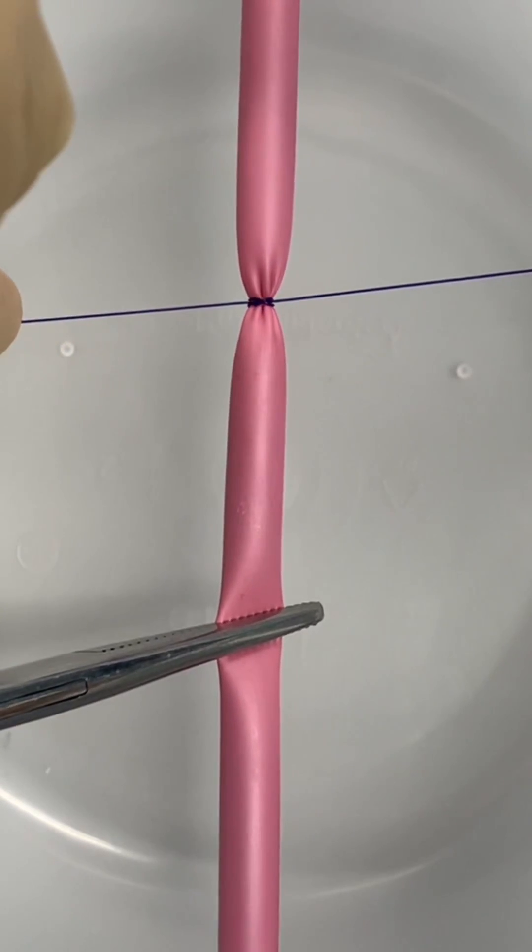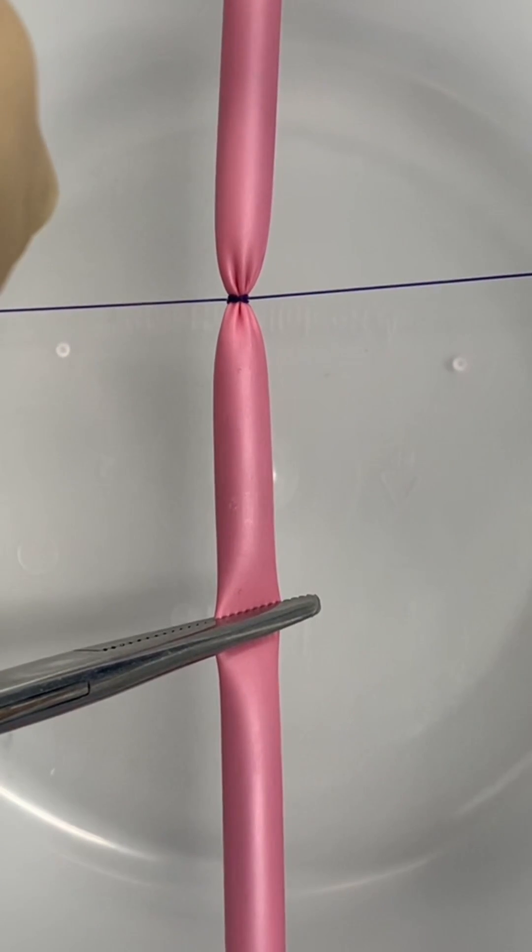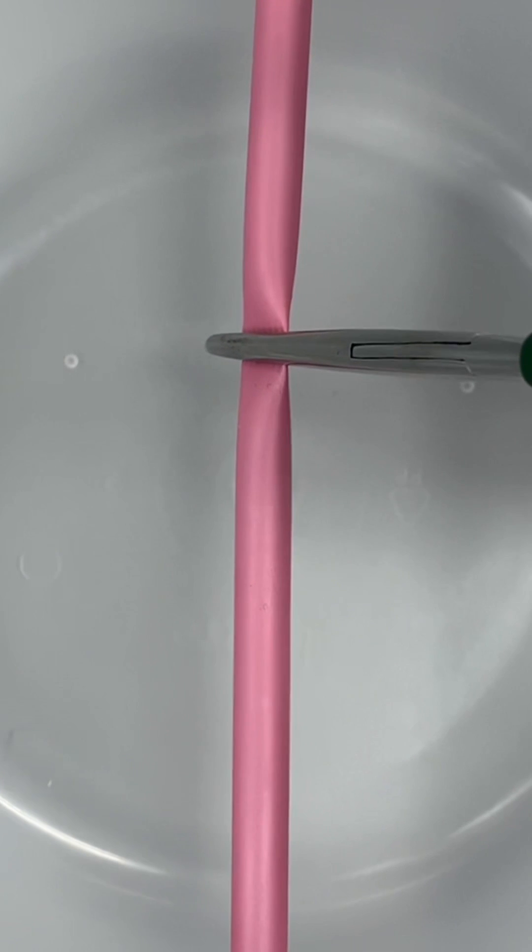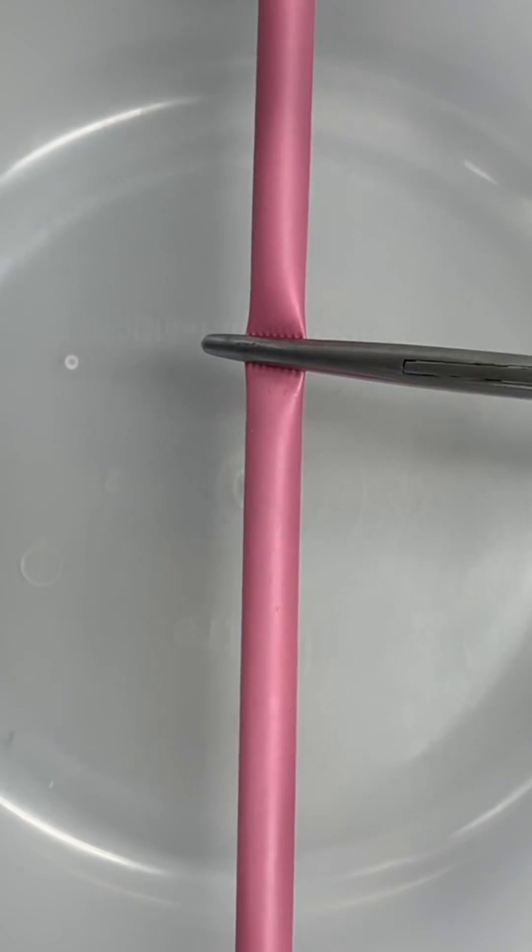The constrictor knot is one of the best ligatures to tie off blood vessels during surgery. If you encounter a very large vessel that needs to be cut, this is what you can do.